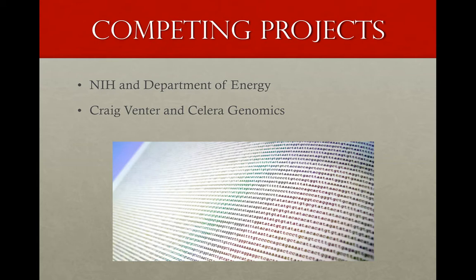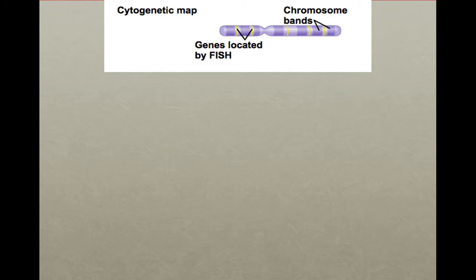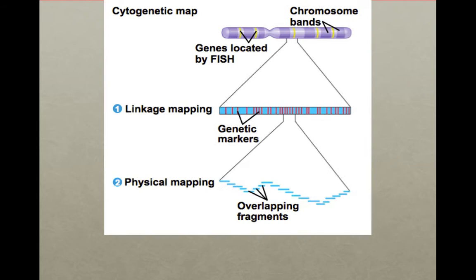The international consortium used a three-step process. The first step creates a linkage map using markers that identify known sequences. Next, a physical map was created by ordering fragments of chromosomes created by restriction enzymes. And finally, they determined the nucleotide sequence of each fragment.